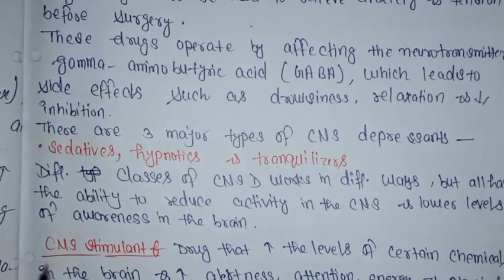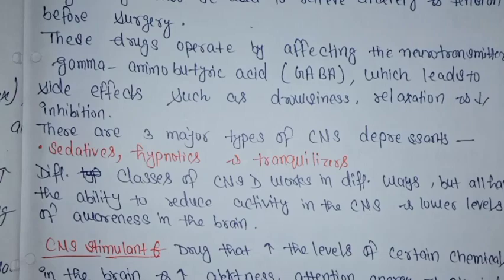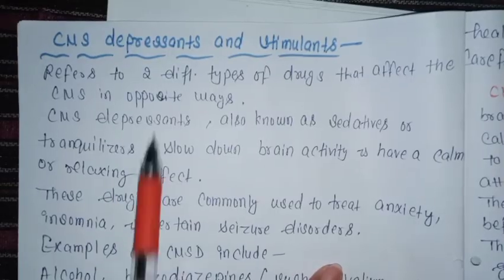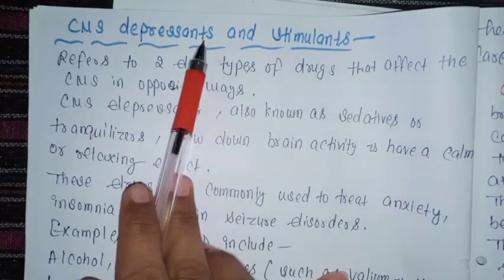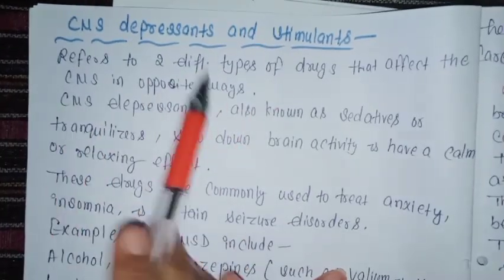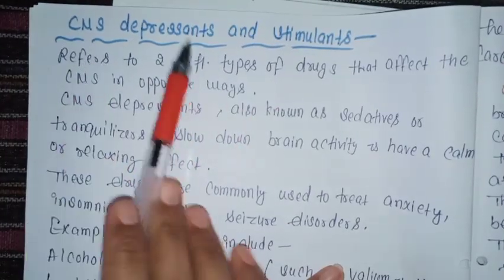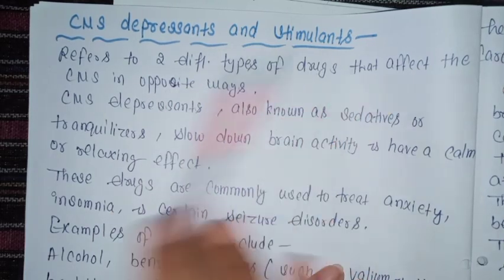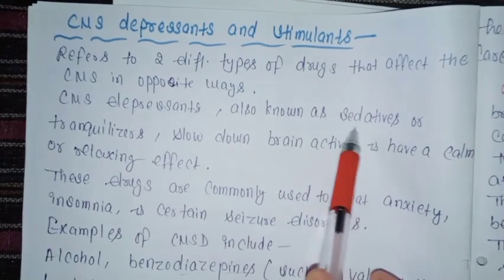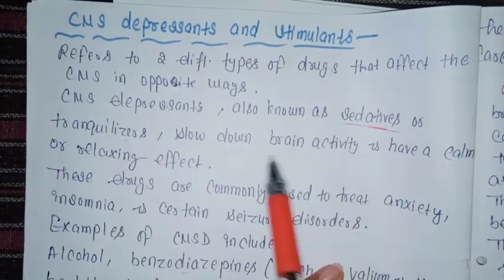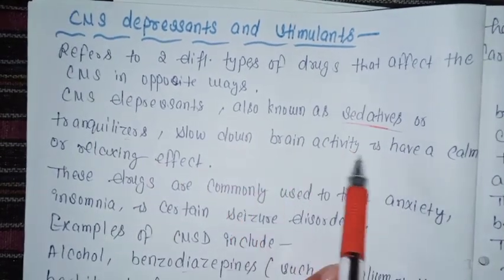Next is CNS Stimulants topic. So we have a question about CNS Depressants and Stimulants. There are two different types of drugs that affect the CNS in the opposite way. CNS Depressants, also known as sedatives and tranquilizers, slow down the brain activity.